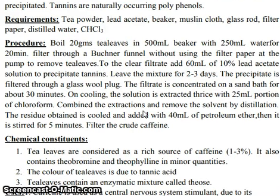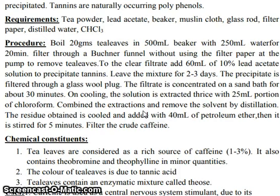Boil 20 grams of tea leaves in a 500 milliliter beaker with 250 milliliter water for 20 minutes. Filter through a Buchner funnel without using filter paper at the pump to remove tea leaves. To the clear filtrate, add 60 milliliter of 10% lead acetate solution to precipitate tannins.